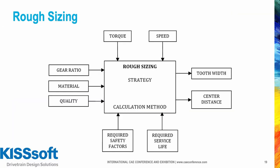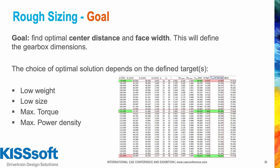The idea of rough sizing is to fix the main parameters such as center distance and face width of the gear transmission, which influences the housing dimensions. Inputs include torque, speed, gear ratio, gear material and quality, required safety factors, and required service life. The goal is to find the optimal center distance and face width to define gearbox dimensions. In this study we focused on the maximum power density solution.